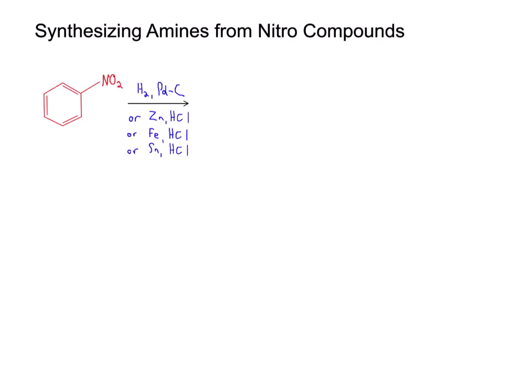Another way to synthesize an amine is through a reduction of a nitro compound. It's likely that the first nitro compound you were introduced to in organic chemistry was from the nitration reaction in the EAS chapter on benzene rings. However, all nitro compounds can be reduced by any of these following reducing agents: H2/Pd/C, ZnHCl, FeHCl, or SnHCl. In all cases, we're going to get an amine instead of the nitro group.